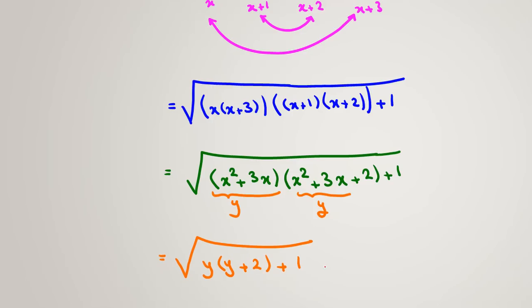And then, if we expand, it will be y times y will be y squared. Y times 2 will be 2y. And the last one is plus 1. If we use the famous identity a plus b squared, you should memorize this. It's a squared plus 2ab plus b squared.